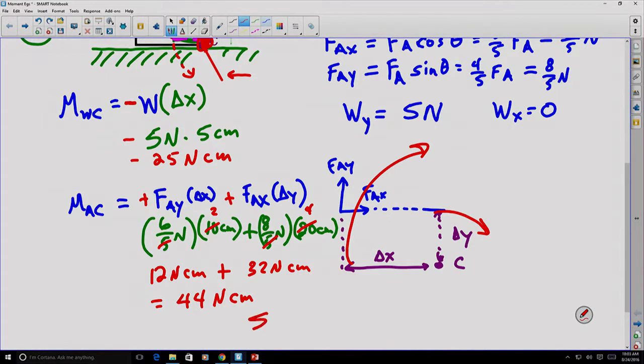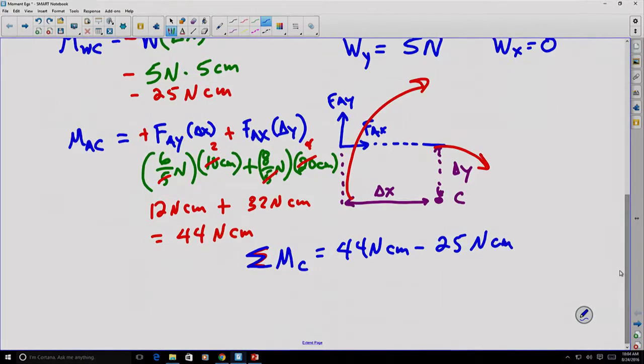Well, the sum of the moments around point C is just those two things added together, 44 Newton centimeters and the negative 25 Newton centimeters. Subtracting those two, because the second one is negative, gives us a value of 19 Newton centimeters. And notice we've defined positive as being in a clockwise direction.